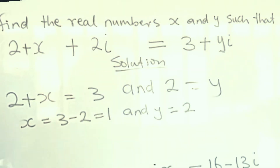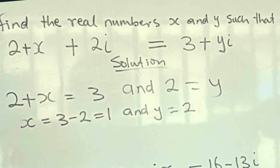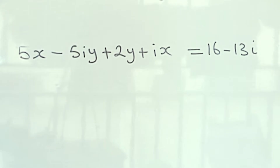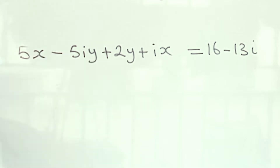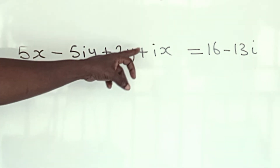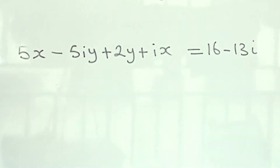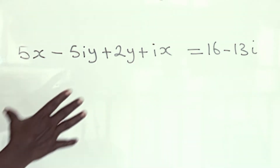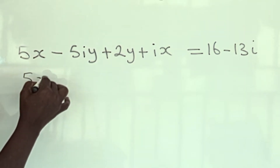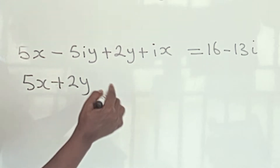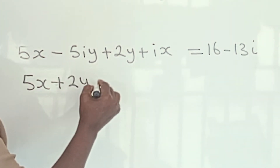And y is equal to 2. Beautiful — and you are done. Now the next problem: find the real numbers x and y such that 5x minus 5iy plus 2y plus ix is equal to 16 minus 13i. Now let me collect like terms together — the real part and the imaginary part.